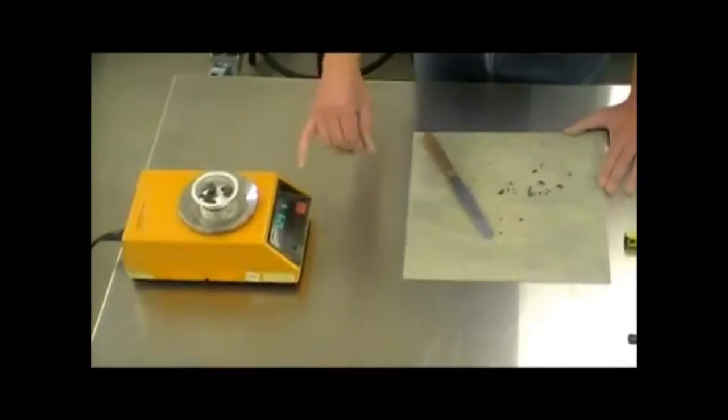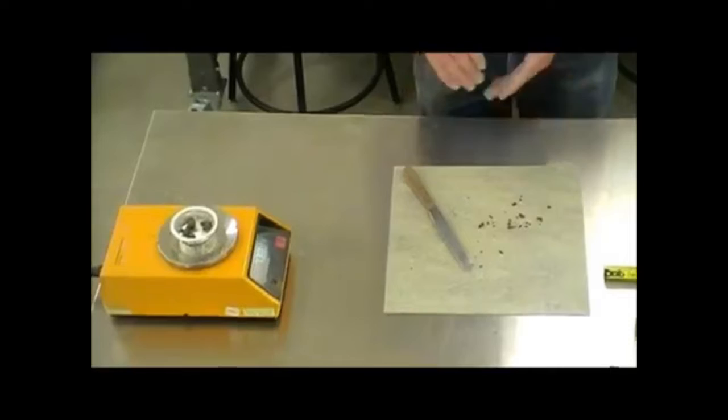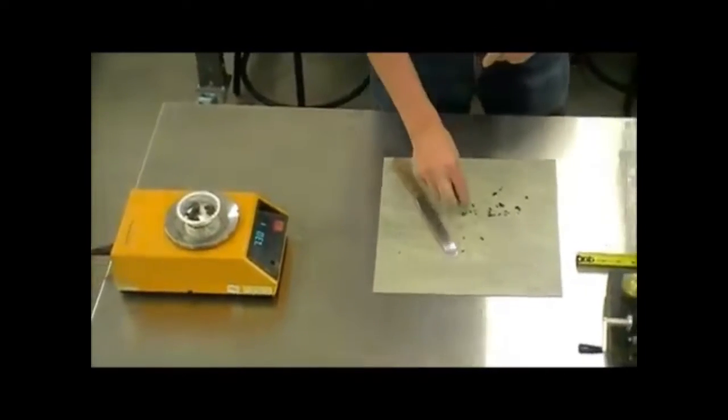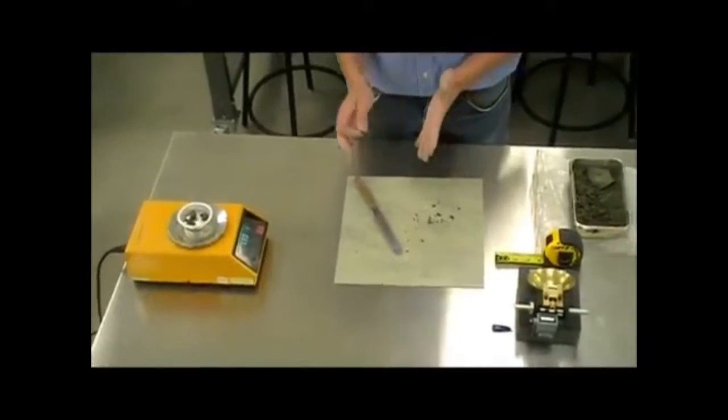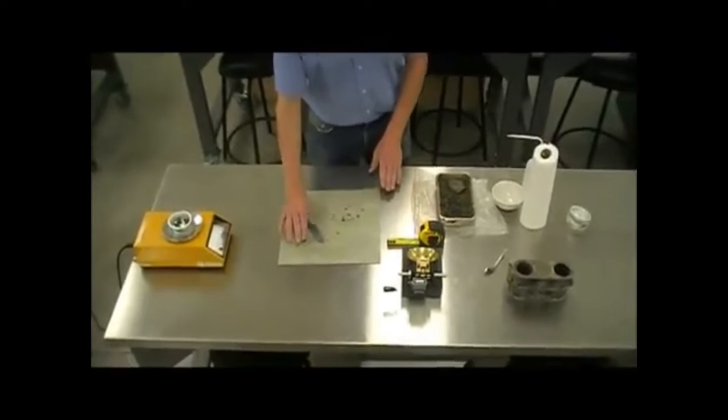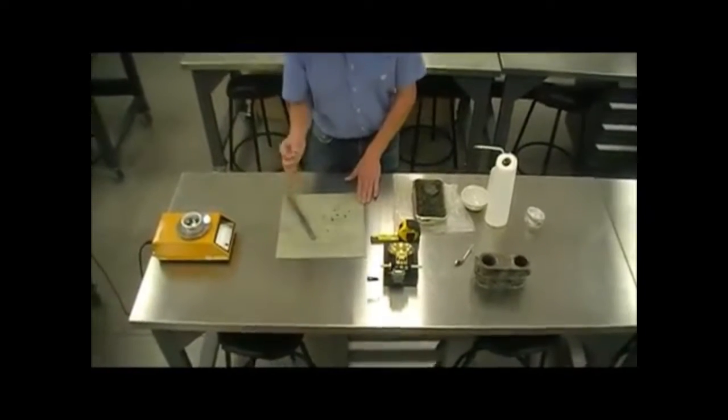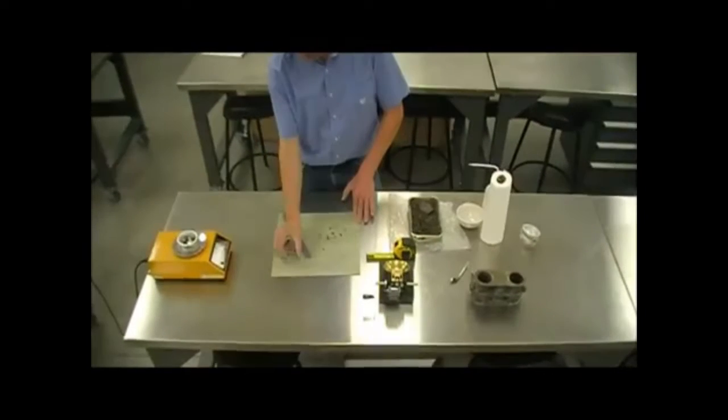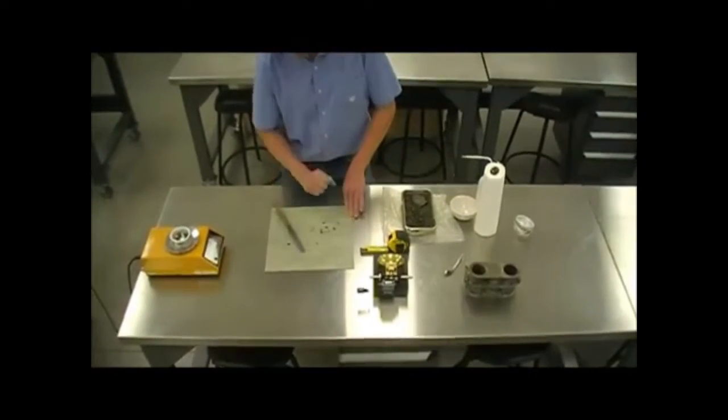These numbers get recorded and go into a calculation spreadsheet that allows us to measure the moisture content. The plastic limit then is the average water content in the condition where we were able to roll the material to a one-eighth of an inch thread for a length of one inch without crumbling.